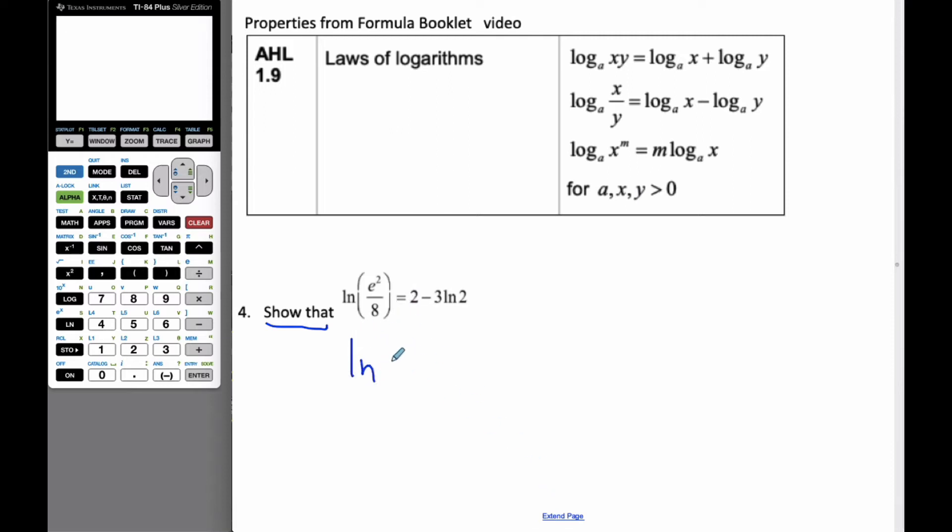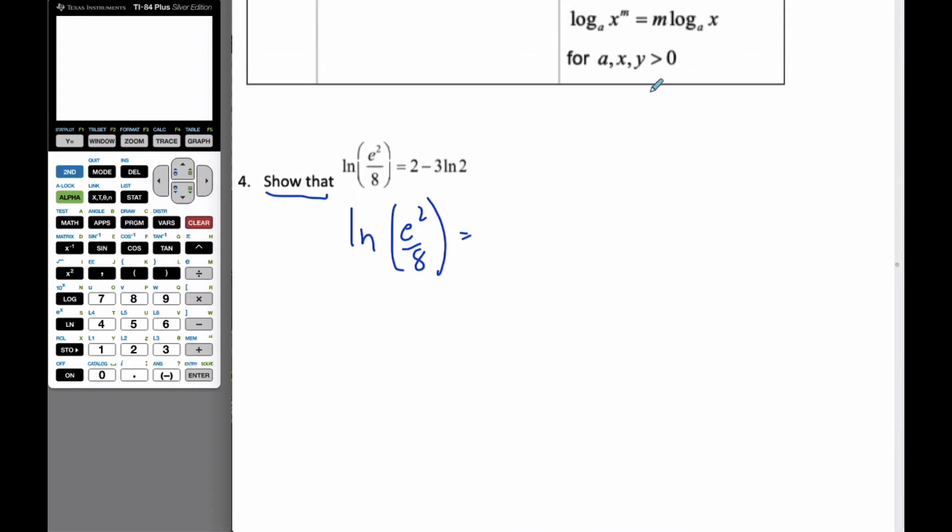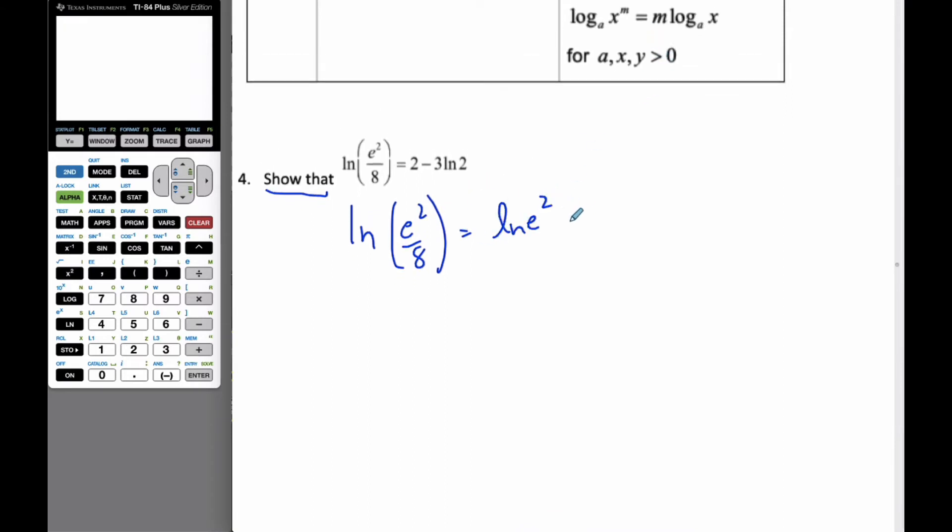So I'm going to start with the natural logarithm of e squared over 8. If I use the properties of subtraction, I know that this is ln e² minus ln 8.